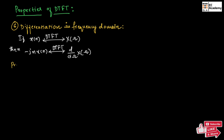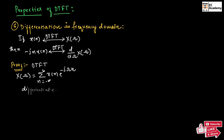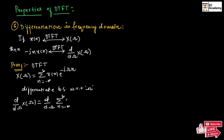Let us prove this. From the definition of DTFT, we can write x of omega is equal to summation of n is equal to minus infinity to infinity of x of n exponential to the power of minus j omega n. Now, let us differentiate both sides with respect to omega. Therefore, we can write d by d omega of x of omega is equal to d by d omega of summation of n equals minus infinity to infinity of x of n exponential to the power of minus j omega n.